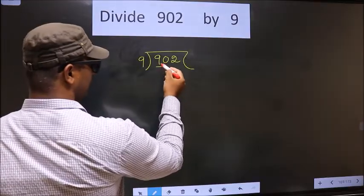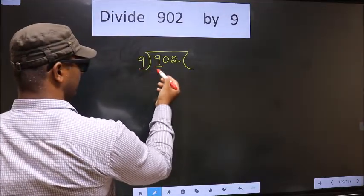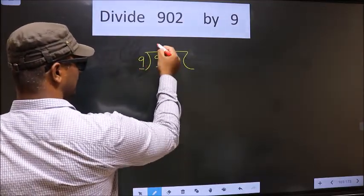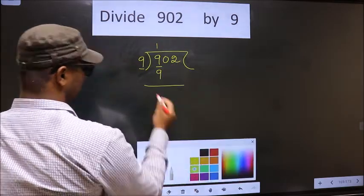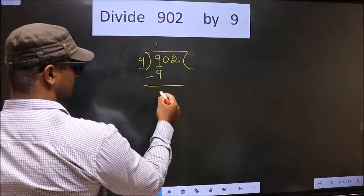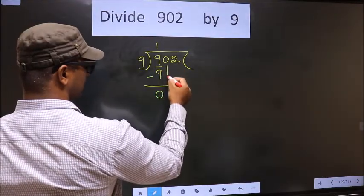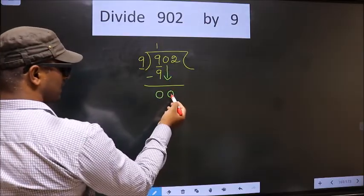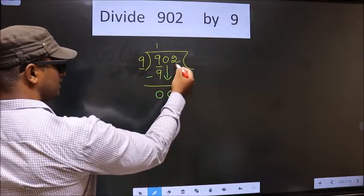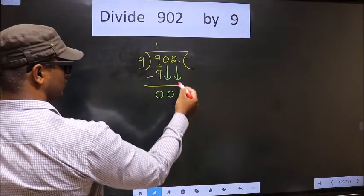Now here we have 9. Here also 9. When do we get 9 in 9 table? 9 once, 9. Now you subtract. 9 minus 9, 0. Now you bring down the other number. So 0 down. Now 0 is smaller than 9. So we should bring down other numbers. So 2 down.